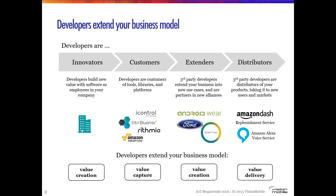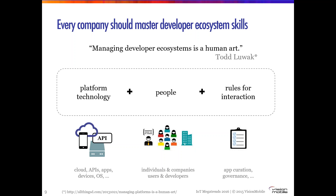Finally, developers can be distributors of your products, taking them into new users and new markets. Perhaps the clearest example is Amazon's Dash Replenishment Service. This allows developers to build into their device or app a replenishment service so that when a consumable is finished — for example, when coffee in your coffee machine runs out — it can automatically order more. Developers become a distribution channel, a channel to sell products over.